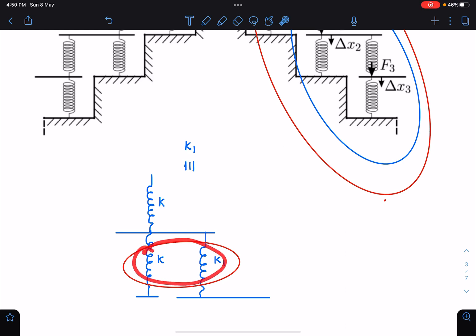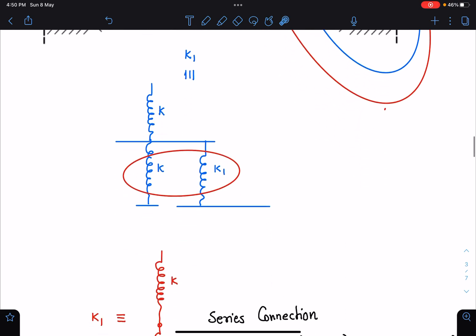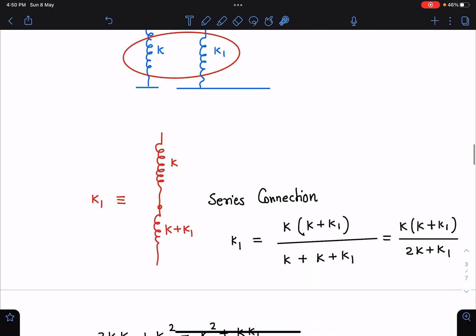I can say this will give k plus k1, and this k will be in series with that. So series combination-wise: k times (k plus k1) divided by (k plus k plus k1). When I simplify this,